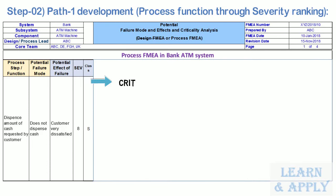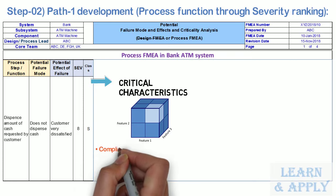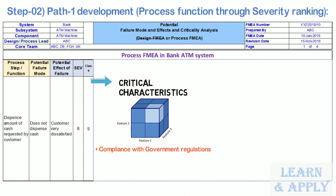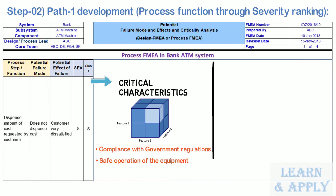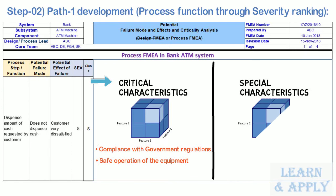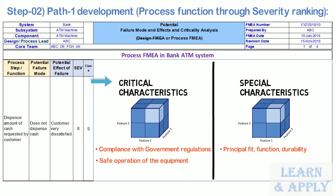The last column in this step is classification of special characteristics, if indicated. Critical characteristics are product features or dimensions where reasonably anticipated variation could directly affect compliance with government regulations or safe operation of equipment. Special characteristics are features or dimensions where reasonably anticipated variation could affect principal fit, function, durability, customer satisfaction, or manufacturability.